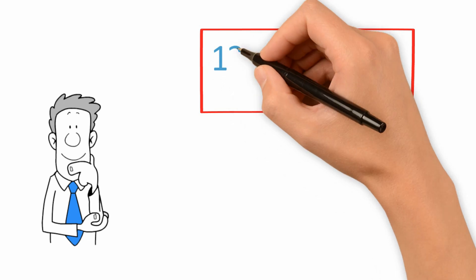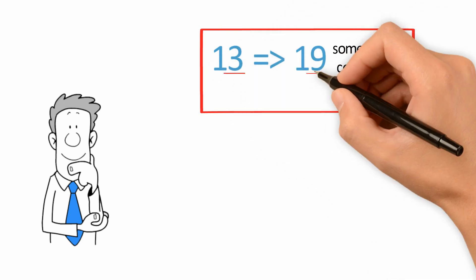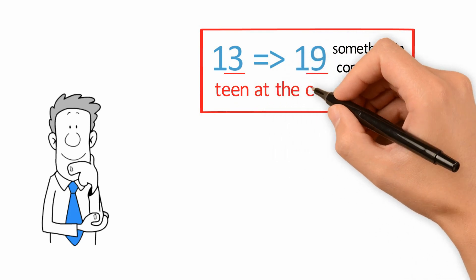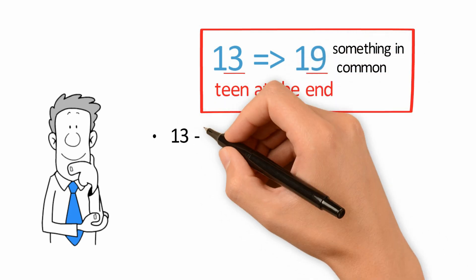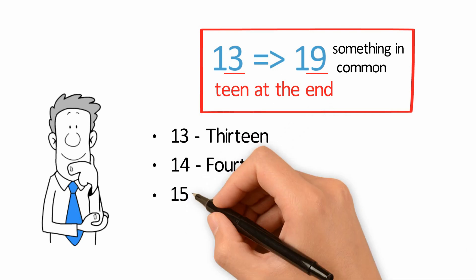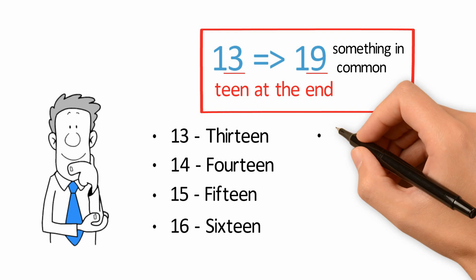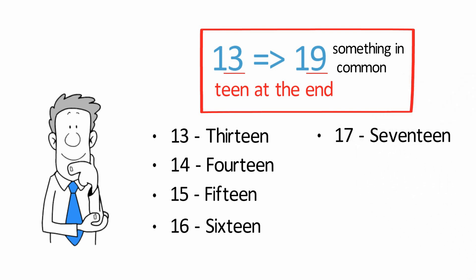All the numbers 13 to 19 have something in common. They have teen at the end of the letters. These numbers are 13, 14, 15, 16, 17, 18, 19.